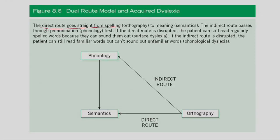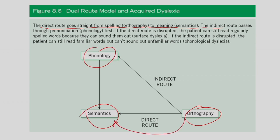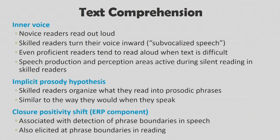The direct route goes from orthography to semantics, while the indirect route goes from orthography through phonology to semantics. One important question is whether the two routes work exclusively — one at a time — or in parallel. According to exclusive models, each word is processed through either the direct or indirect route depending on its characteristics: irregular and highly familiar words go through the direct route, while less familiar regular words go through the indirect route. Parallel models propose that both routes process each word simultaneously in a horse-race fashion.